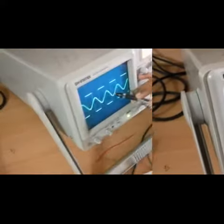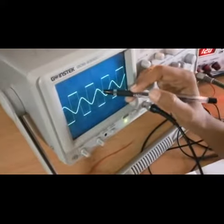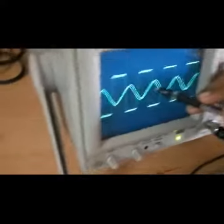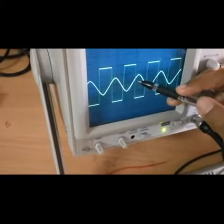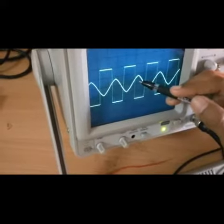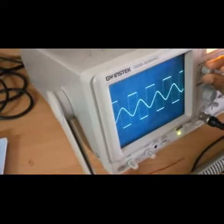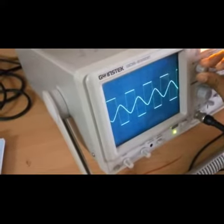The sine wave and the square wave where they cut—that point is the UTP, the upper triggering point. You can see here it is in the second division, which means it is measuring 2V. On the other side, that is LTP.